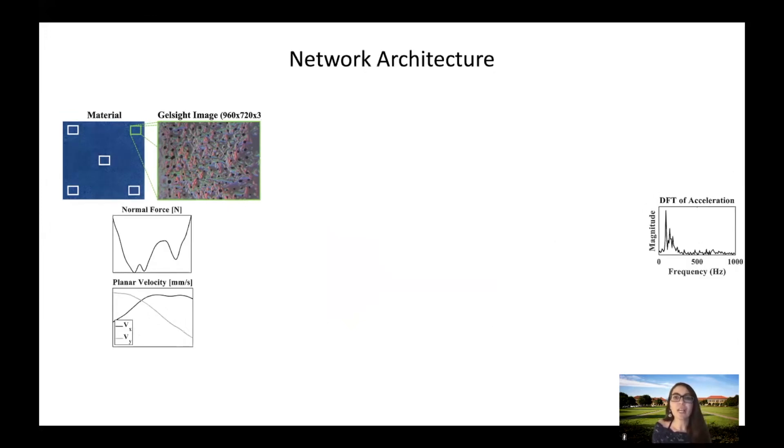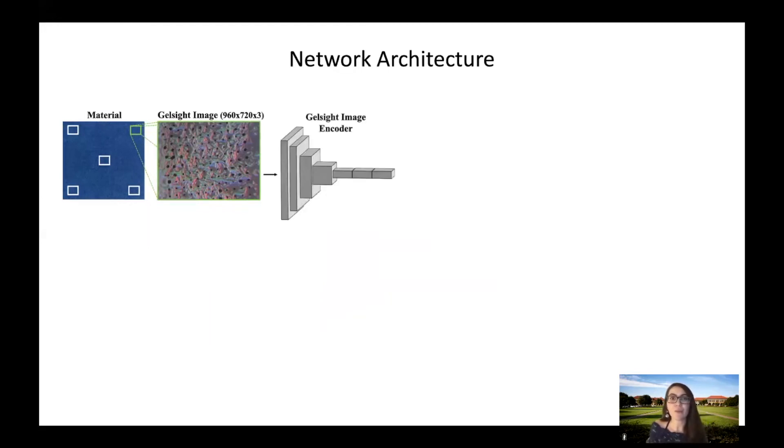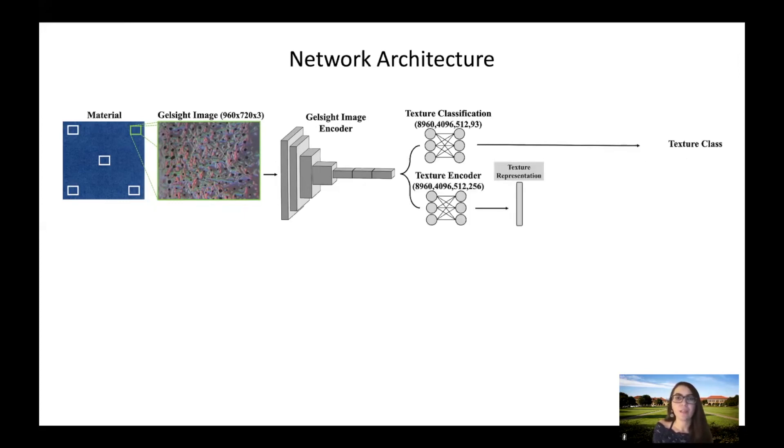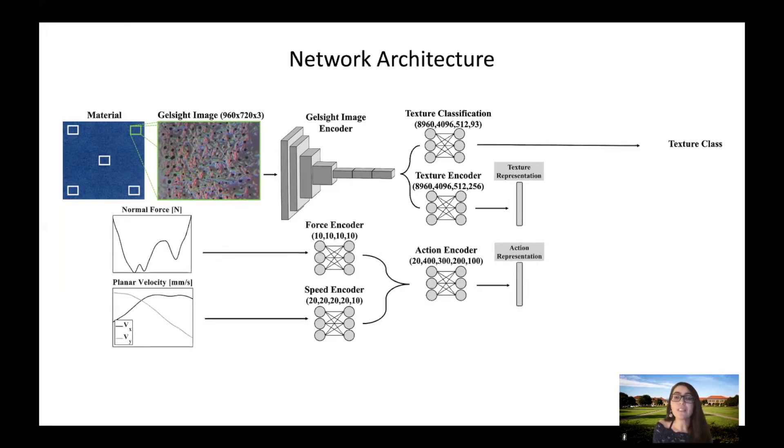The architecture that enables the short-time DFT prediction of our model consists of the following. We use a structure similar to AlexNet as image encoder. This encoder was chosen based on its optimal performance on the proxy task of classifying the gel site images. The architecture is trained in two stages. First, we train the image encoder for texture classification using a cross-entropy loss. Afterward, we freeze these pre-trained weights and use the output of the image encoder as input to the texture encoder. We then train an architecture that encodes gel site images into a texture representation vector and encodes the force and velocity of the user into an action vector. Texture and action representation are then combined and fed into an acceleration predictor module for predicting the DFT magnitude of the accelerations.